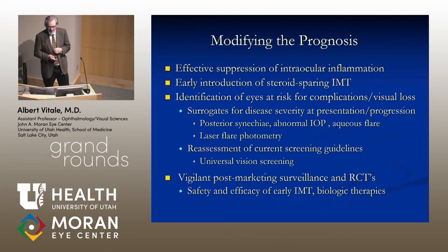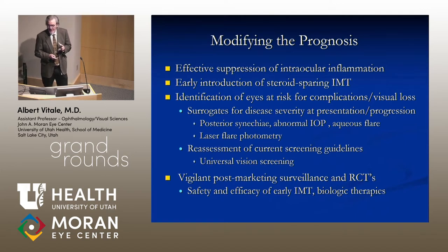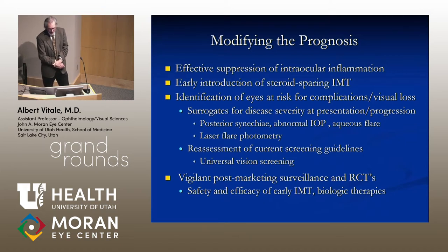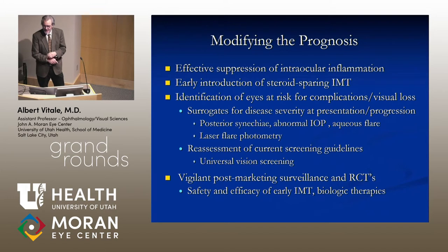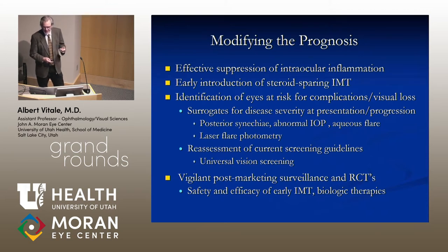Modifying the prognosis in this very fragile group of patients will require effective immunosuppression and early treatment of intraocular inflammation with early introduction of immunomodulatory therapy, and identification of eyes truly at risk for complications and visual loss. This would include surrogates of disease severity such as presentation with ocular pathology, and new modalities such as laser flare photometry and OCT evaluation of anterior segment flare. There is also a call for reassessment of screening guidelines.